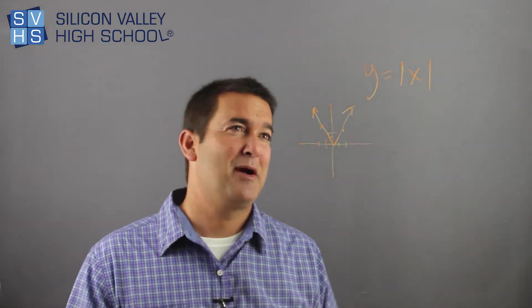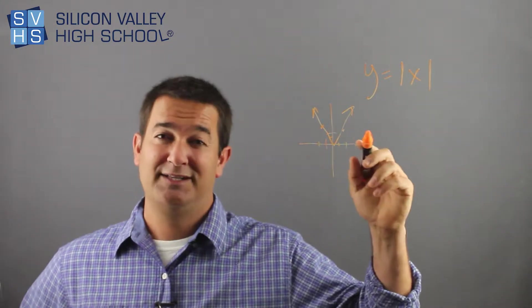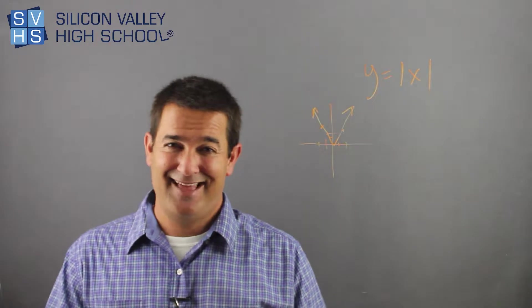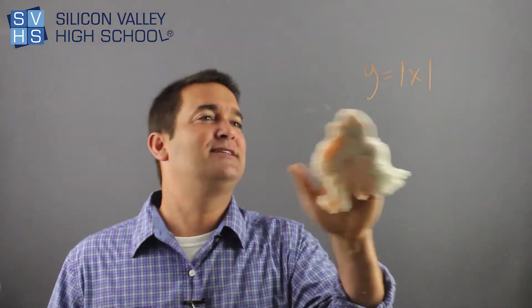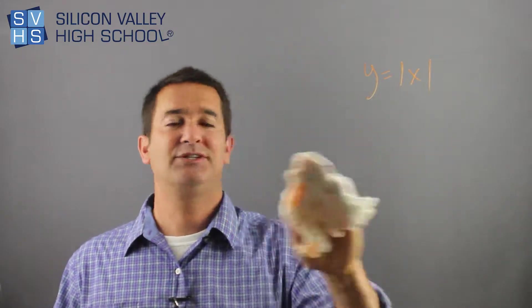From there, the problem is you might have one question that says graph Y equals absolute value of X. And then everything after that becomes more difficult. So this is how you decide what happens to that graph. There's a bunch of transformations that can happen to the original graph.